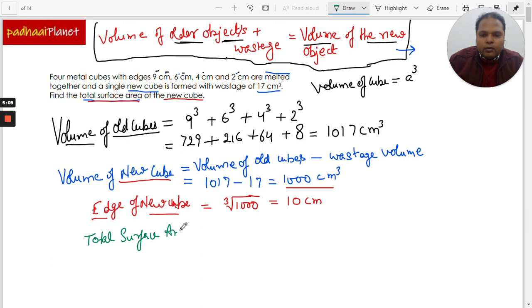is equal to 6a². So that means it's like 6 multiplied by 10 square, so it will finally come to 600 square centimeters.